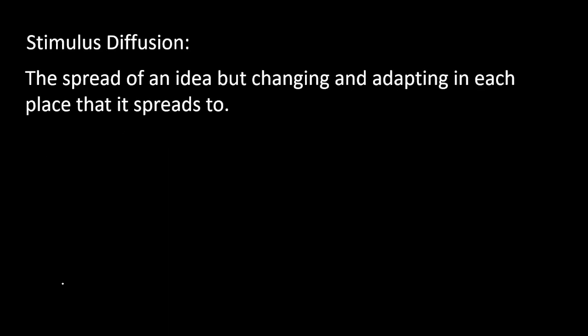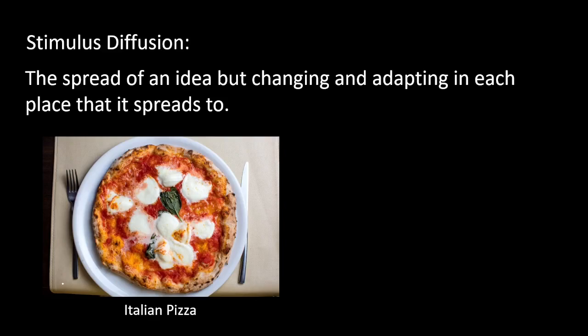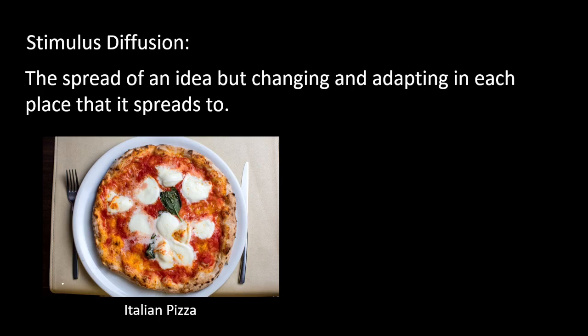The next is Stimulus Diffusion, which is the spread of an idea that increases as it goes to new places but changes and adapts in the new place it spreads to. An example: here we have Italian pizza from Italy, and then we have Chicago Deep Dish Pizza. They are both pizza — it's still the same idea — but the characteristics are different. When pizza spread to Chicago and deep dish developed, it changed and adapted. That's Stimulus Diffusion.